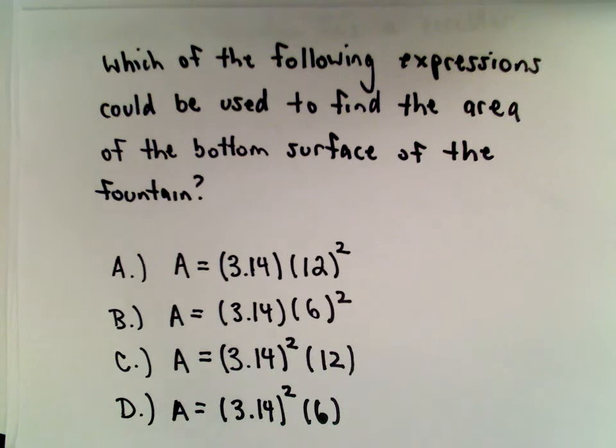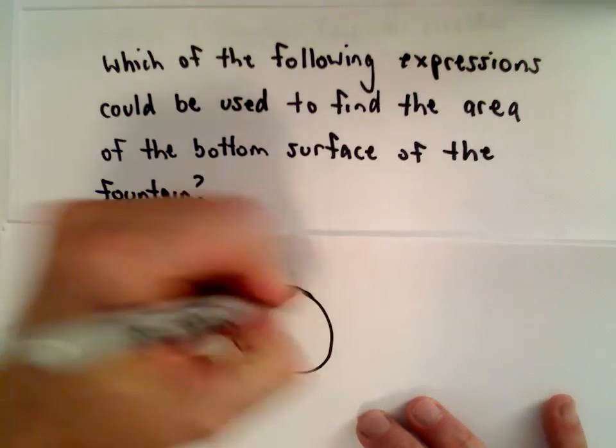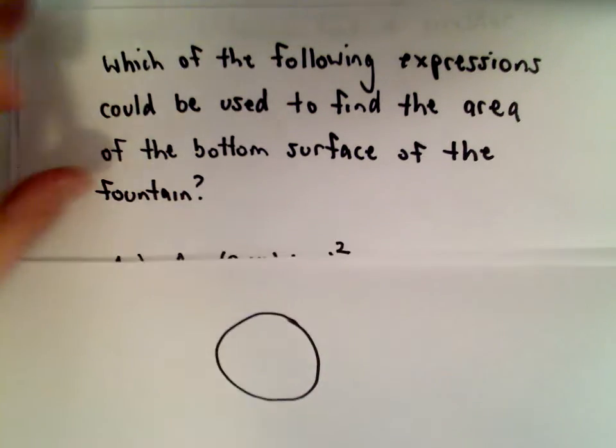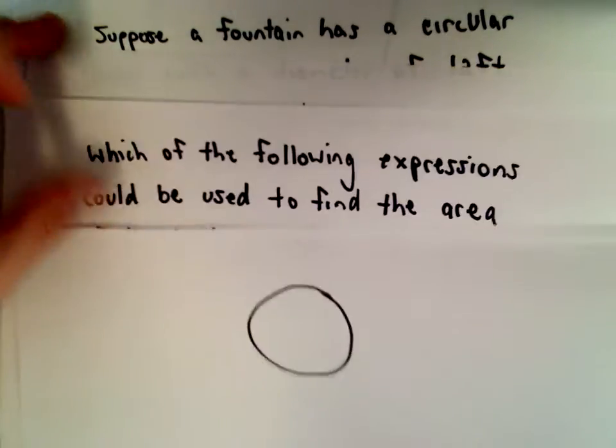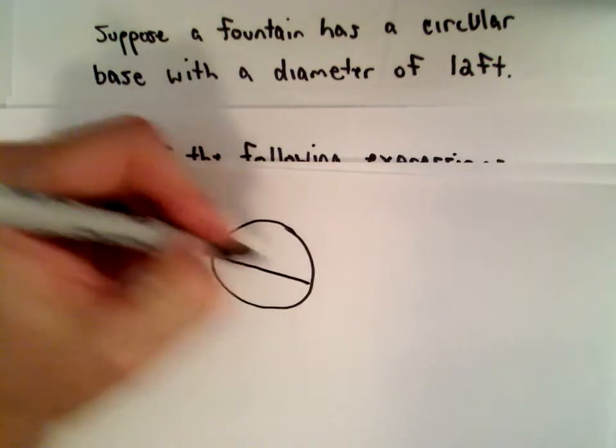So this is just an area question here. Let me draw a picture. There's our fountain if we were looking at it from above. We said that it has a diameter of 12 feet. So a diameter of 12 feet. That means the distance across is 12.